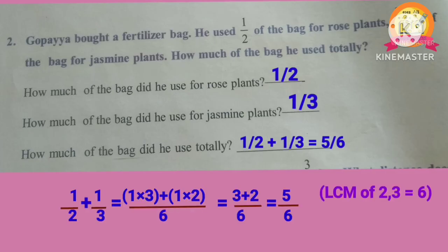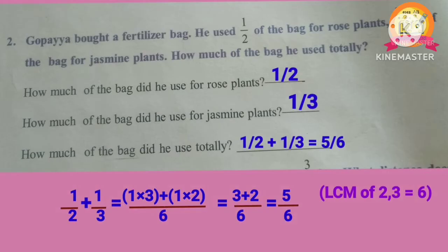Second problem: Gopaya bought a fertilizer bag. He used half of the bag for rose plants and 1 by 3 of the bag for jasmine plants. How much of the bag did he use totally? He used 1 by 2 for rose plants and 1 by 3 for jasmine plants. We add 1 by 2 plus 1 by 3. As the denominators are different, LCM of 2 and 3 is 6. After adding, we get 5 by 6. Therefore, the total bag used is 5 by 6.